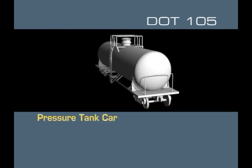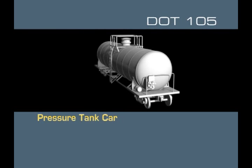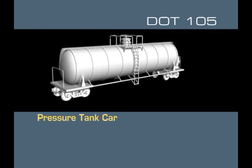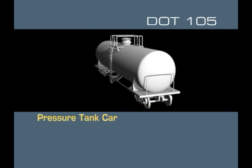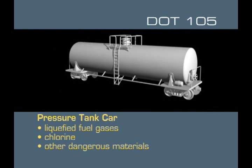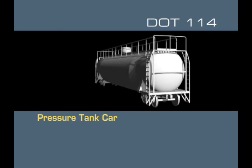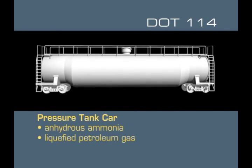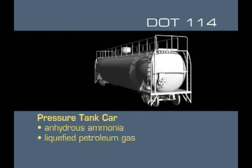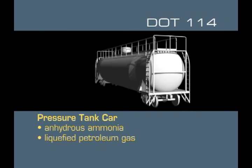The next general category of rail car is the pressure tank car. These cars are cylindrical with rounded ends; some have exposed structural supports, while others have an insulated outer shell. The DOT-105 carries liquefied fuel gases, chlorine, and other highly dangerous materials. The DOT-114 often contains anhydrous ammonia and liquefied petroleum gas. Pressure tank cars have heavy-duty valves that can fail if enough stress is placed on the container.